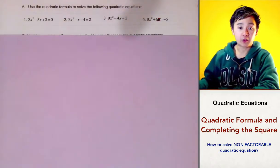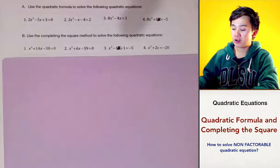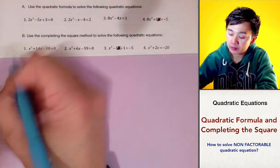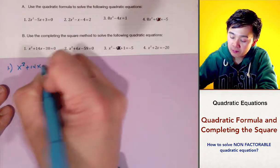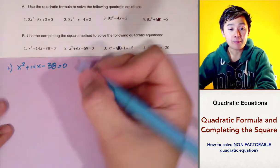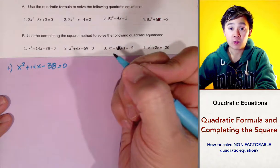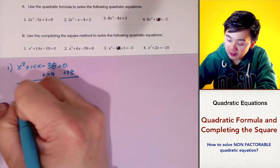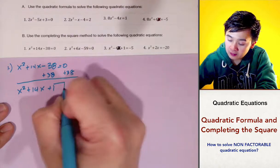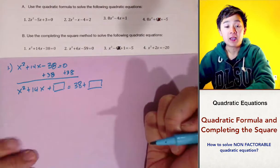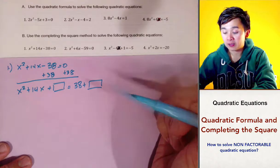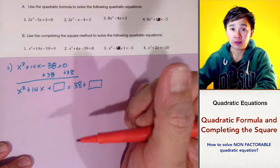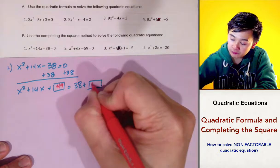Now we're going to use the completing the square technique to find the solution set. For problem number 1, we have x squared plus 14x minus 38 equal to 0. The first step is to move the constant by adding 38 on both sides, rewriting it as x squared plus 14x plus a box equals 38 plus another box. To find our perfect square trinomial, the number we need is half of the middle term, which is 7, and then squared, which is 49.